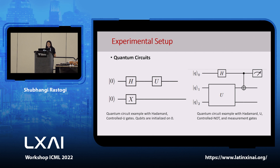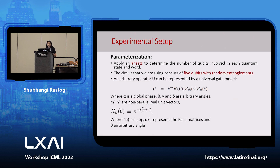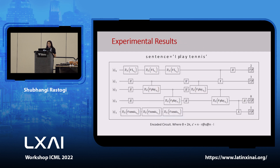For the experimental part, we developed different quantum circuits using control-U gates, control-NOT gates, measurement gates, etc. We used five qubits with random entanglements and different operators and gates. This is the encoded circuit we developed for the sentence 'I play tennis.' We passed this sentence and used five qubits, with the gates and operators used to develop the circuit. This quantum mechanics part was done largely by Javier, who will be joining during the poster session in the evening.